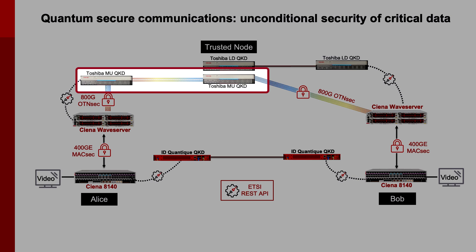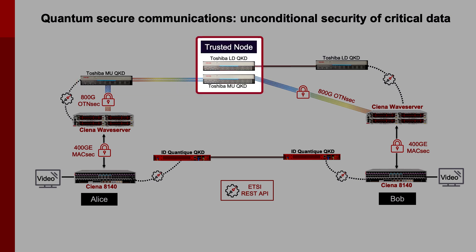The signal then co-propagates alongside the quantum signal using the Toshiba QKD devices to reach the trusted node, which is required to extend the reach of the quantum signal. Since quantum signals cannot be amplified, the reach is limited to roughly 100 kilometers. This means that if your application needs to reach a longer distance, you will need to deploy a trusted node at intermediate sites, as we have in this demonstration, so that the reach of the quantum signal can be extended to the endpoints.